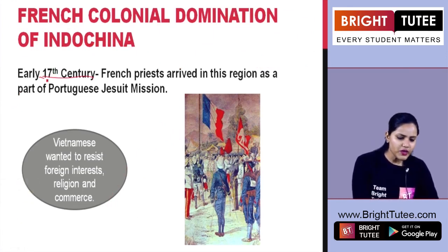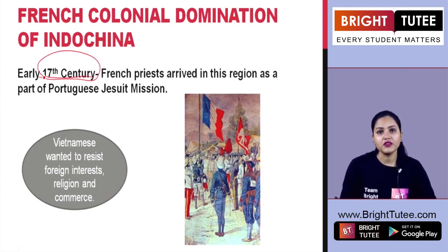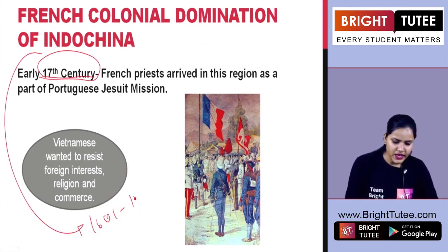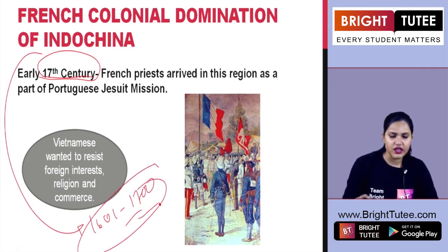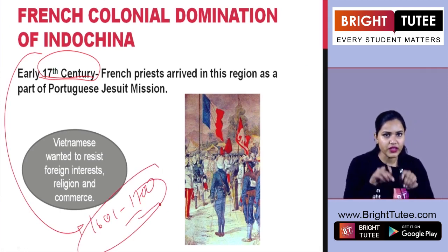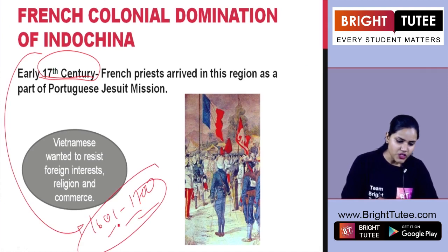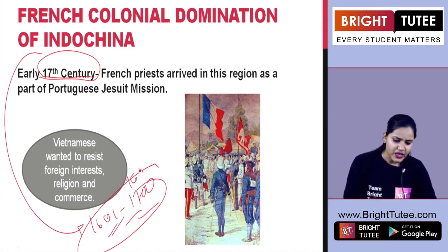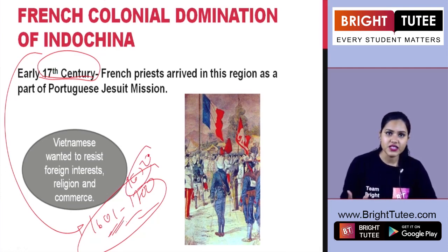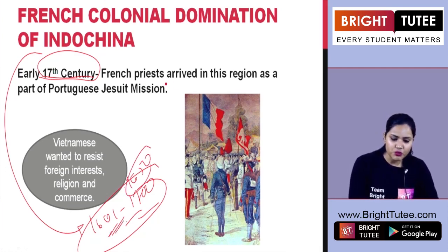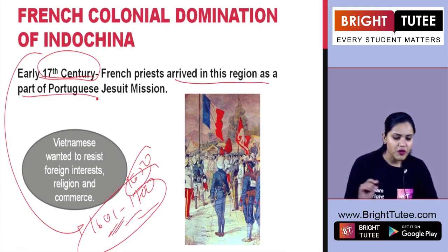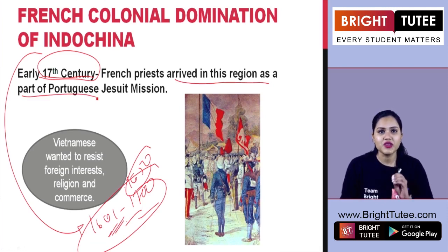When we talk about the 17th century timeline, it means from 1601 to 1700, somewhere around that period. Early 17th century means the early 1600s or before the 1650s. So the French priests arrived in this region as part of a Portuguese Jesuit mission.